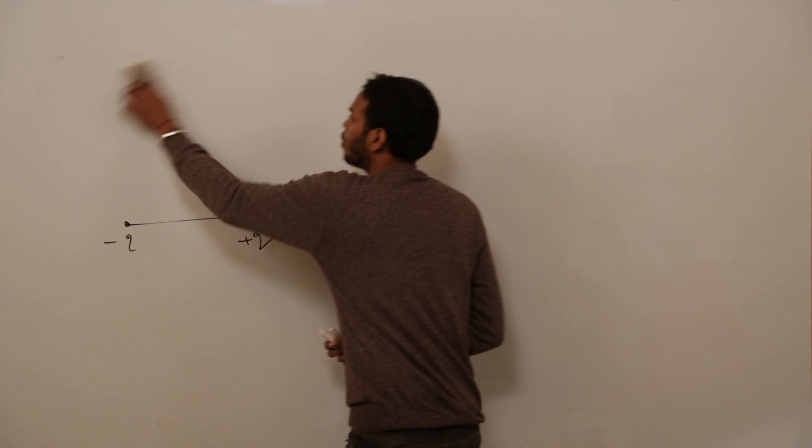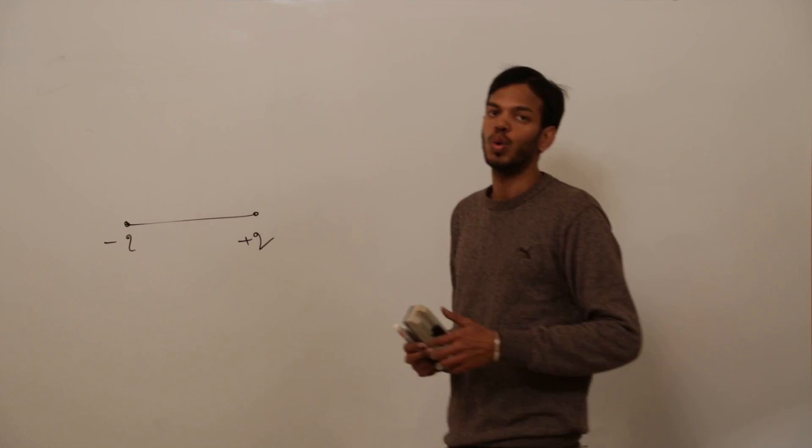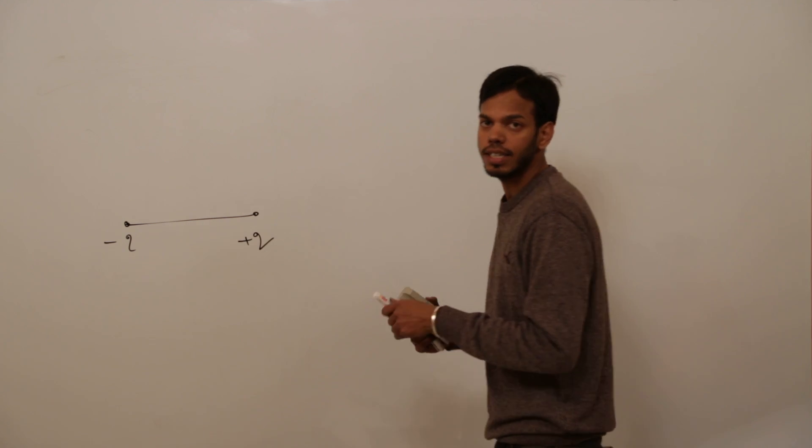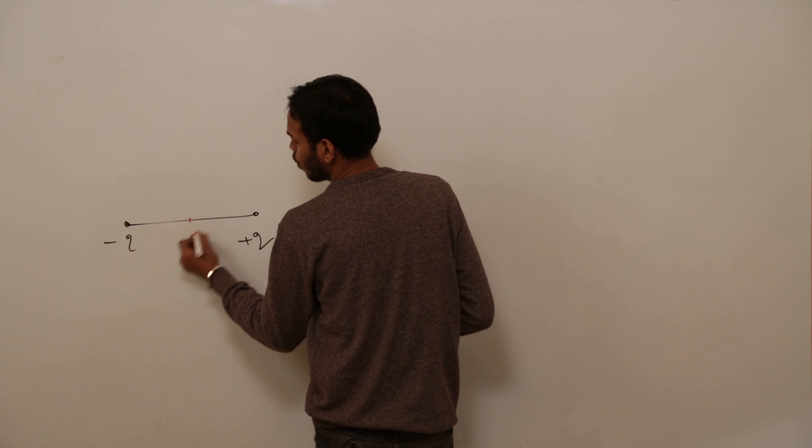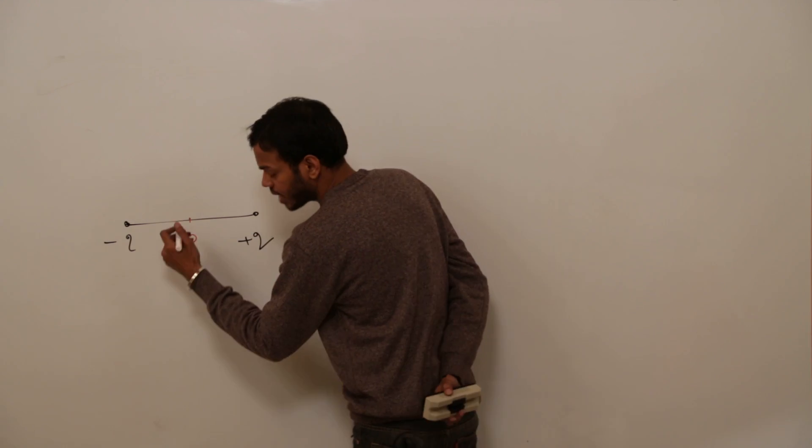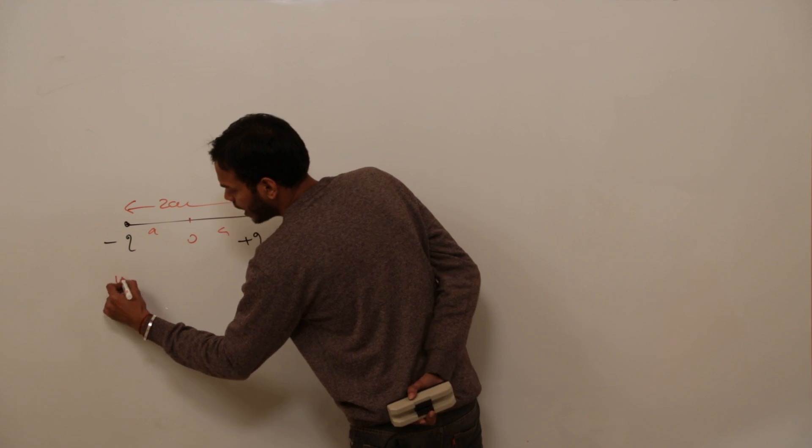What is the value of potential at the center of dipole? 2kq by A. Am I right? No, I was not. It is 0. Why? It is a scalar quantity. Instead of 2a, what A and A net voltage will be?